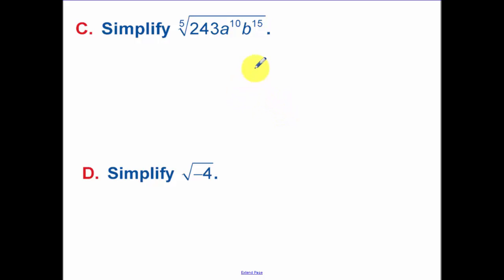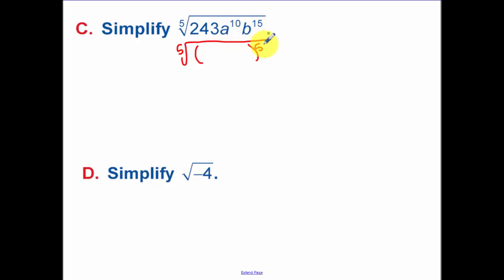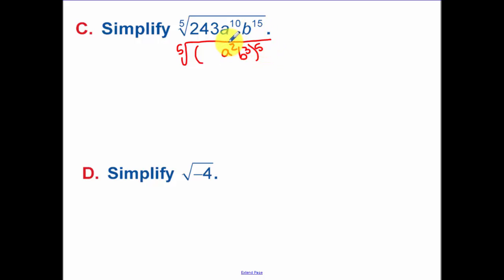Now something more complicated — the 5th root. I need to write everything as something to the 5th power. For the variables: a to what power times 5 gives me a to the 10th? That's a to the 2nd power. I made a mistake — it should be a squared, because you're multiplying: 5 times 2 gives 10. For b, that's to the 3rd power since 5 times 3 is 15. Now for 243, I need to break that down.